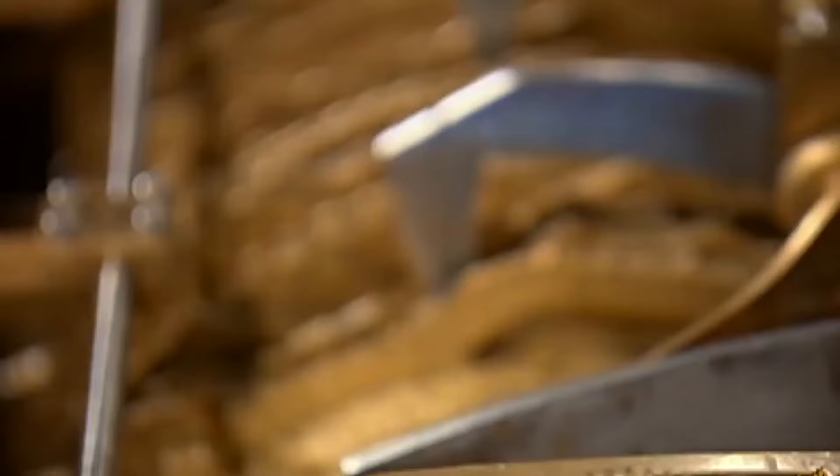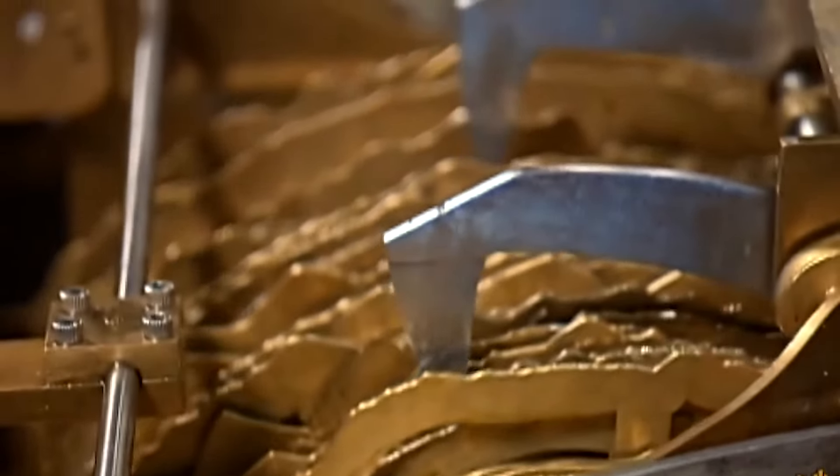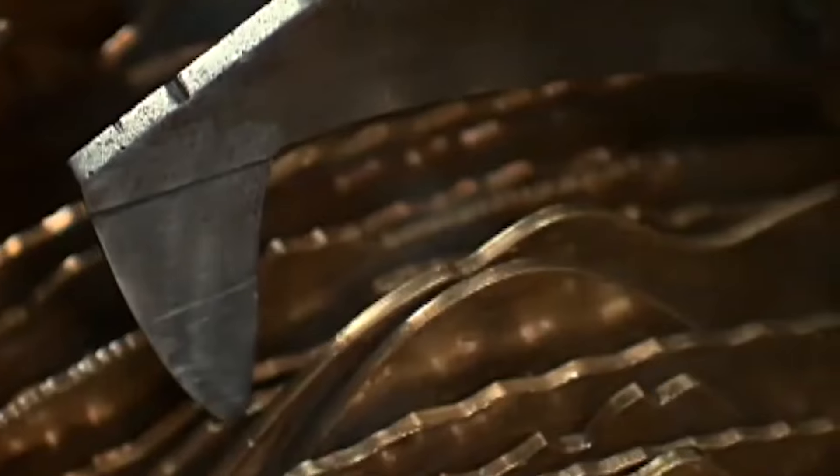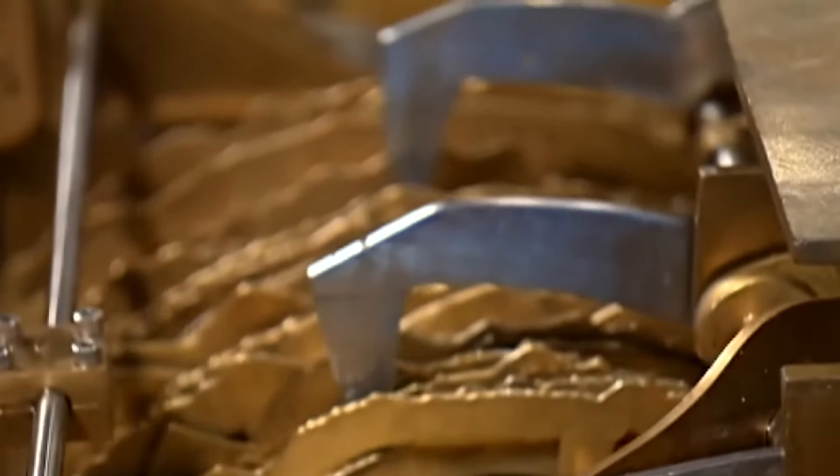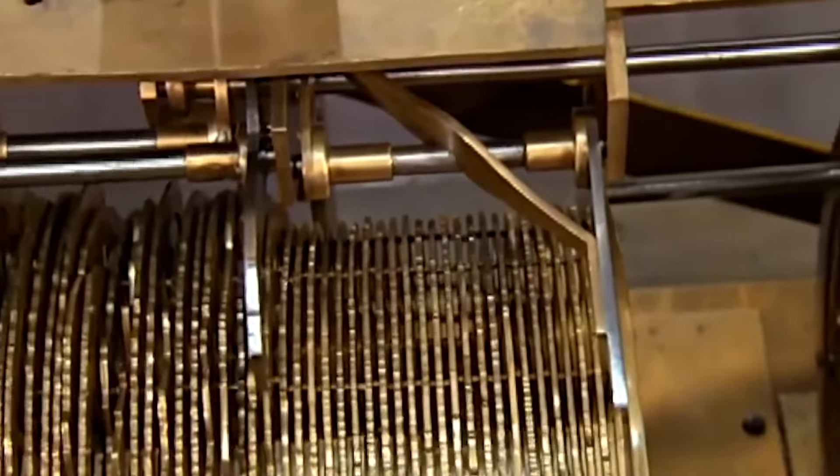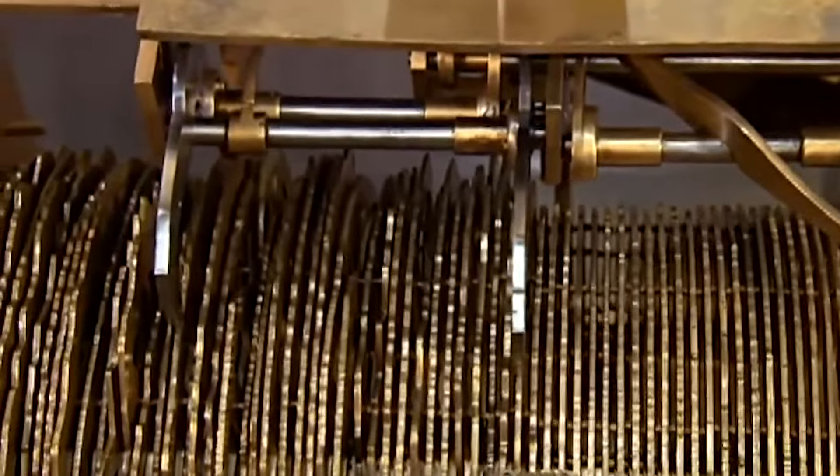These clockwork automata have one thing in common: their movements are regulated by cam-based mechanisms. The cams are discs with a finely variable profile, which in fact represent the mechanical memory on which the movements to let the automata draw or write are recorded.